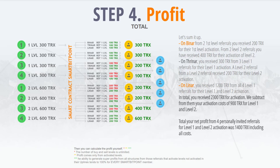Referral number 4 paid 600 TRX for level 2 activation. In binary, you get 200 TRX. In trinary, you get 200 TRX. In Lina, you get 200 TRX. In total, you get 600 TRX. Total income: 2300 TRX.